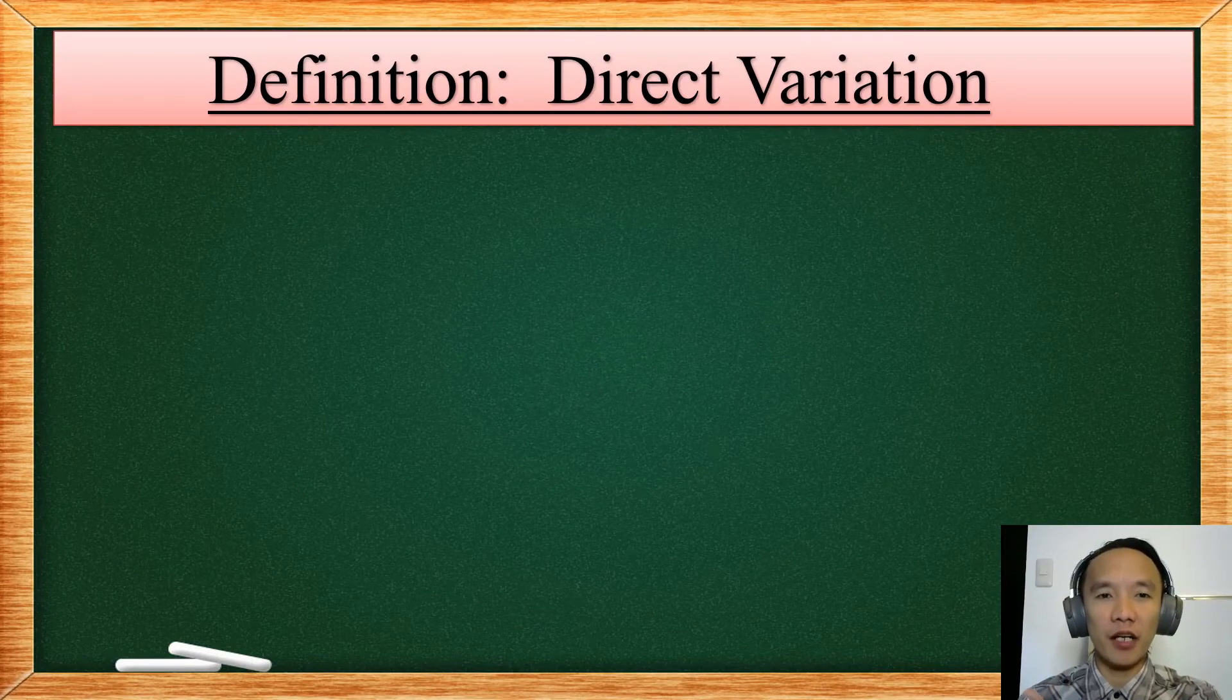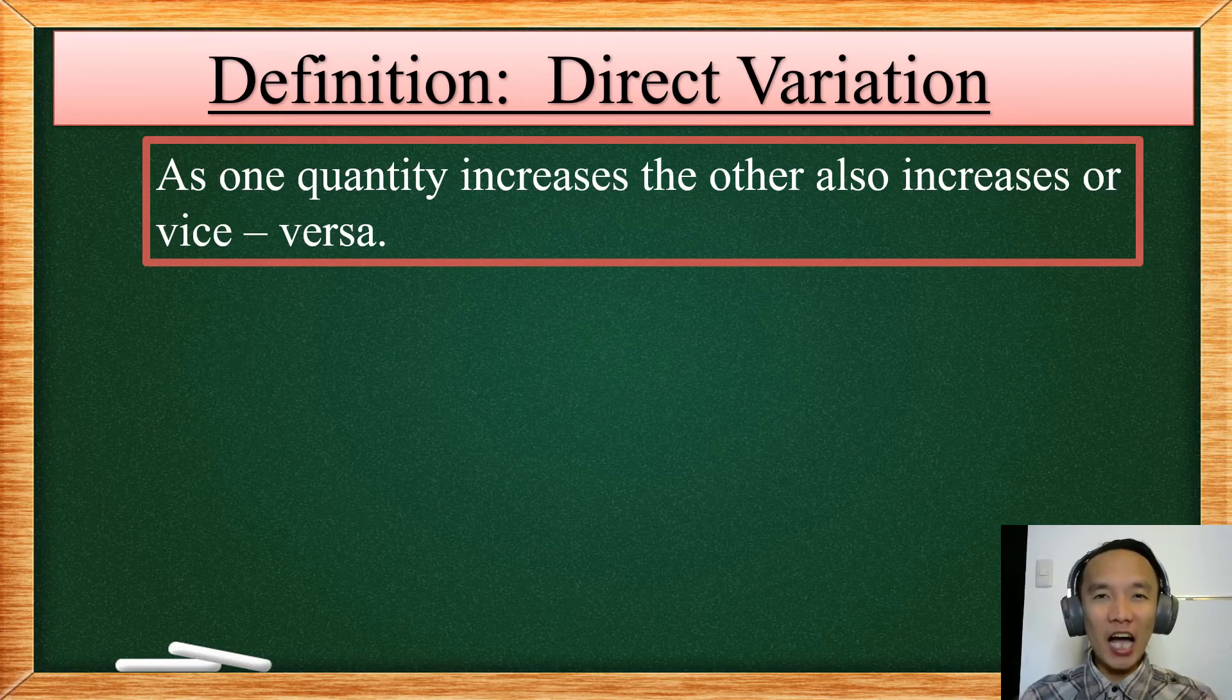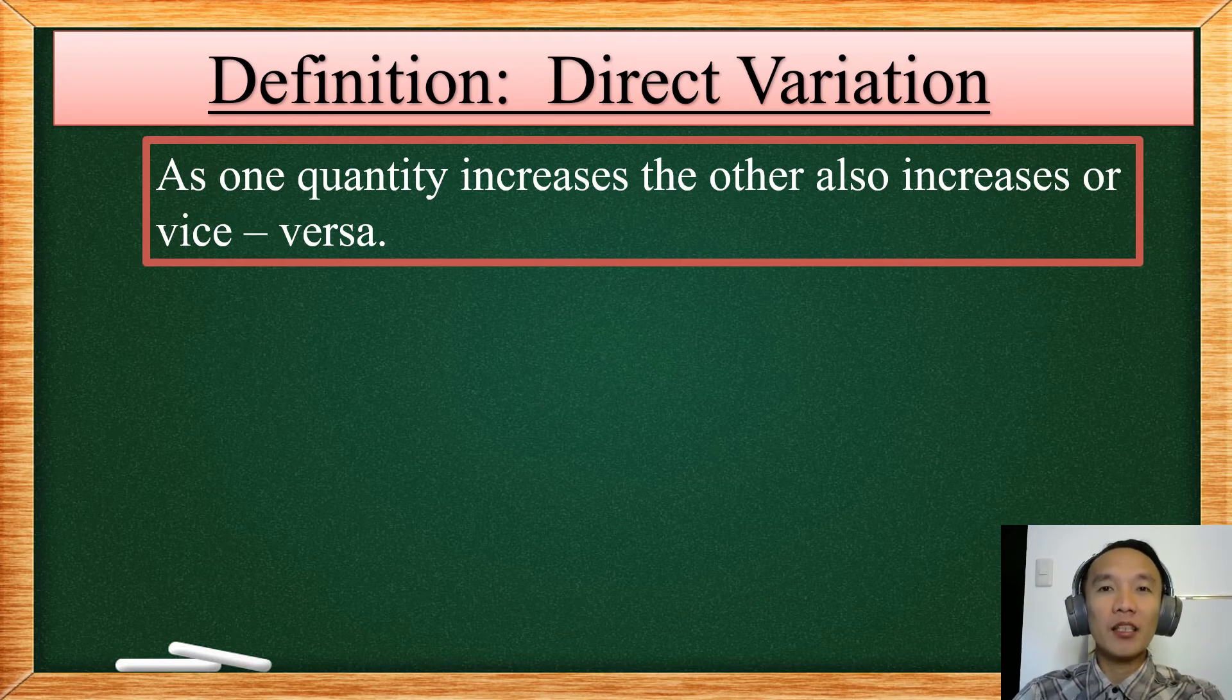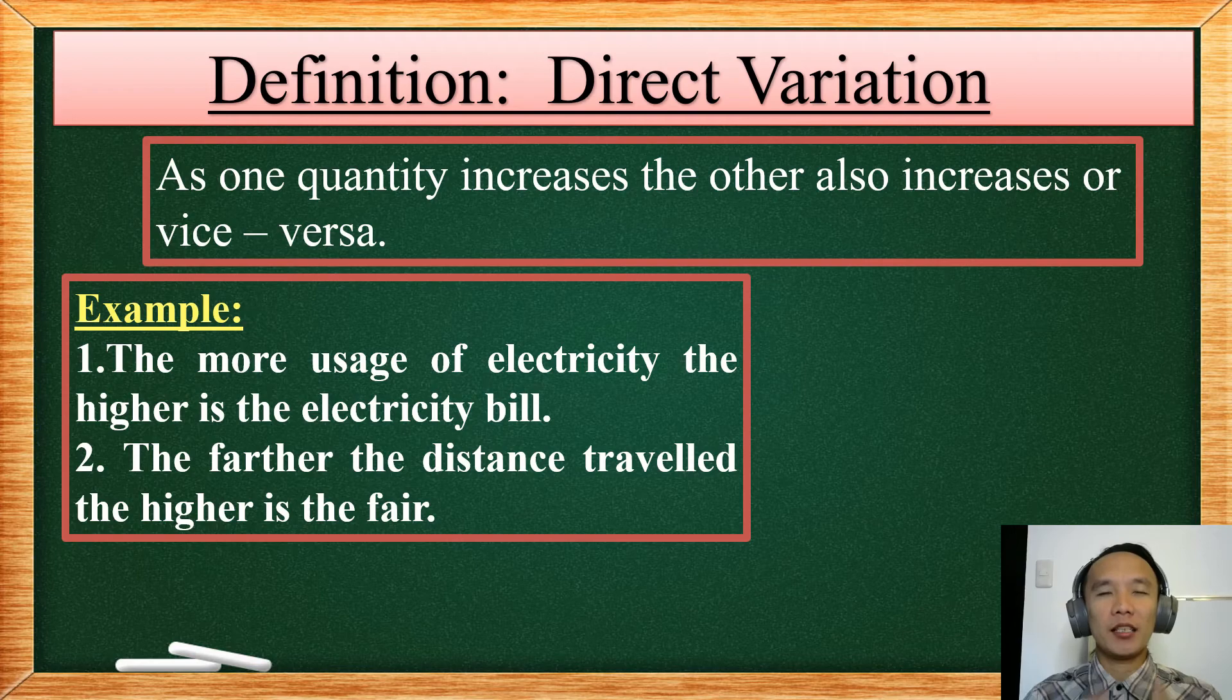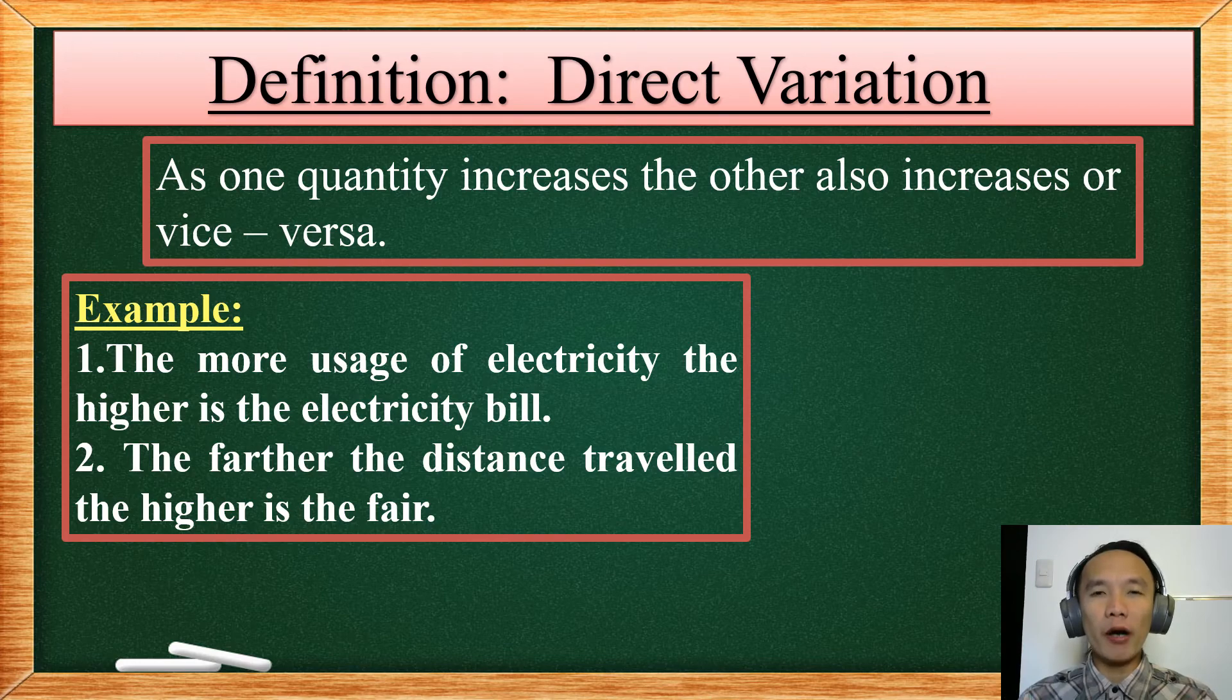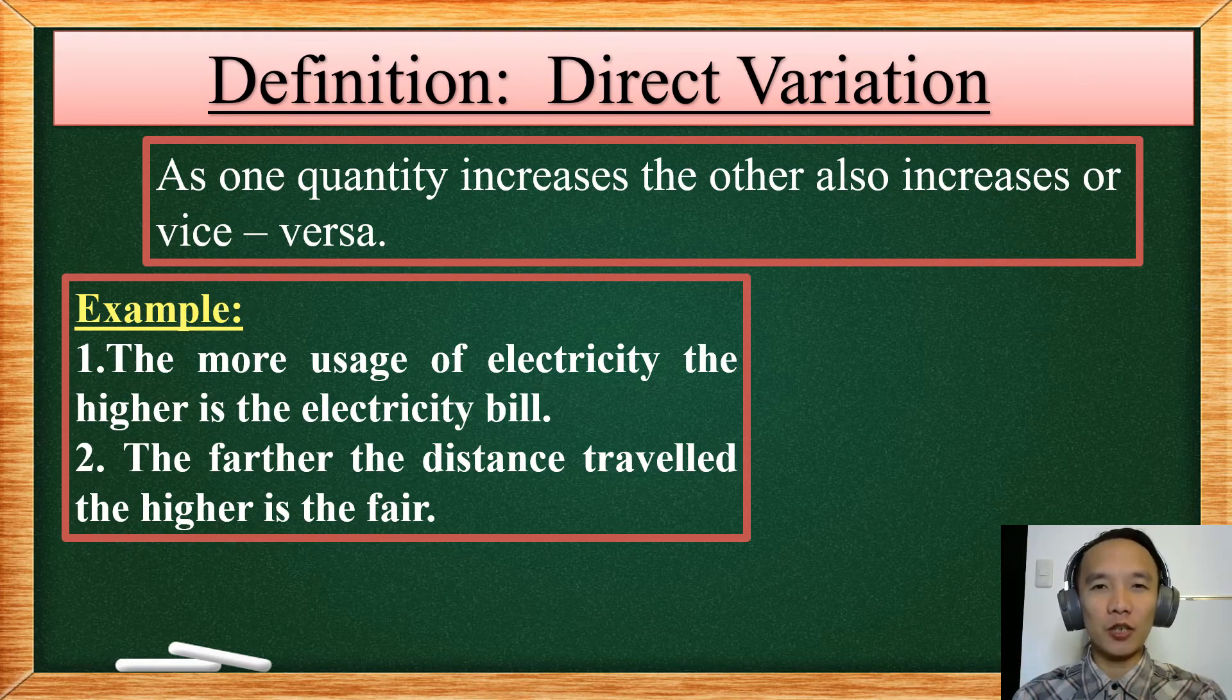So first, what do we mean by a direct variation? It means to say that as one quantity increases, the other quantity also increases. Or if one quantity decreases, the other quantity also decreases. So here are some of the examples. The more electricity or the more gadgets you plug in into your electricity, it means to say that the higher the bill you are going to pay. Then second is the farther distance that you travel, it means to say that the higher is the fare.